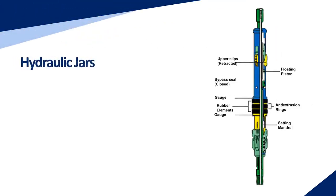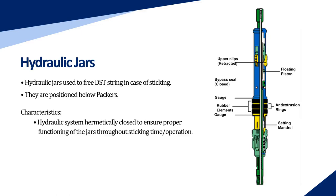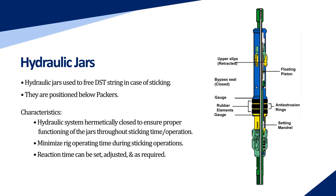Hydraulic jars are used to free the DST string in case of sticking. They are positioned below the packers. The hydraulic system is hermetically closed to ensure proper functioning of the jars throughout the sticking operation. They minimize rig operating time during sticking operations. Reaction time can be set and adjusted as required, and impact force can be adjusted within the limits of the hydraulic system.